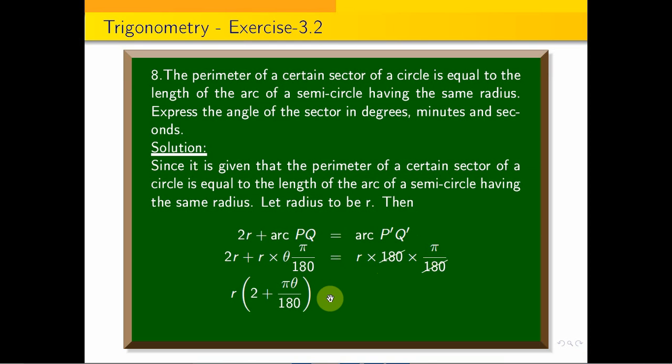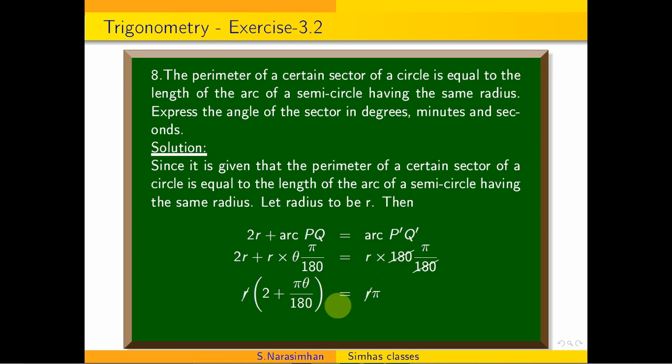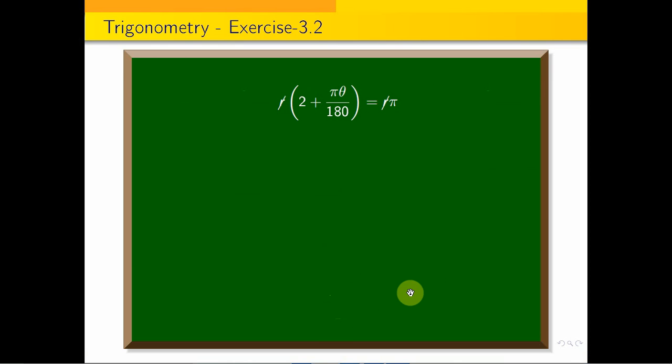On the left-hand side, r is common. That is r(2 + πθ/180) = rπ. Cancel r. So 2 + πθ/180 = π, which gives πθ/180 = π - 2. Substituting π = 22/7, we get θ/180 = 22/7 - 2.